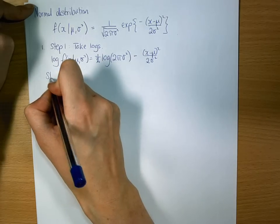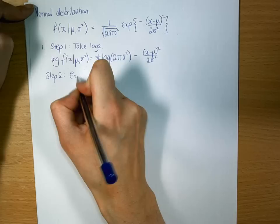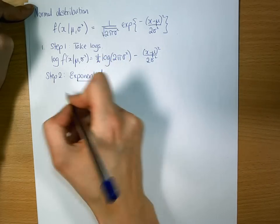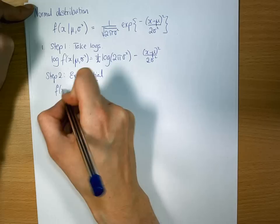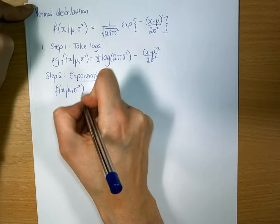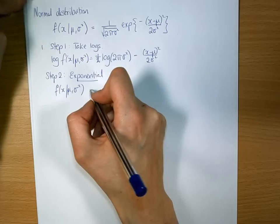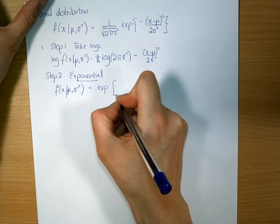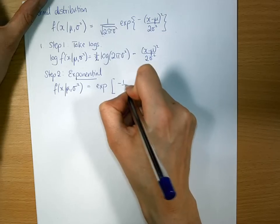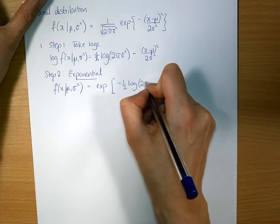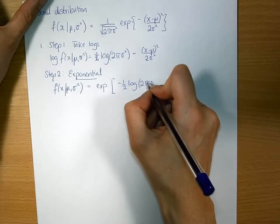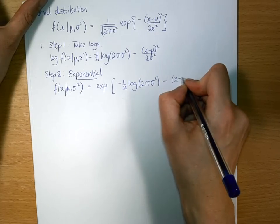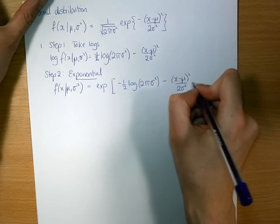Step 2 is exponentiate. So f of x given mu sigma squared equals exponential of minus 1 half log 2 pi sigma squared minus x minus mu squared over 2 sigma squared.